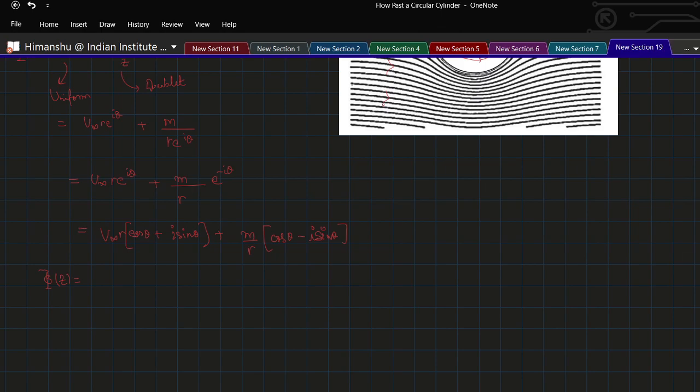Separate out the real and imaginary terms. We get u infinity R plus M by R times cos theta plus i times u infinity sin theta minus M over r sin theta. So phi in terms of R and theta would be u infinity R plus M by R cos theta, and psi equals u infinity sin theta minus M over r sin theta.